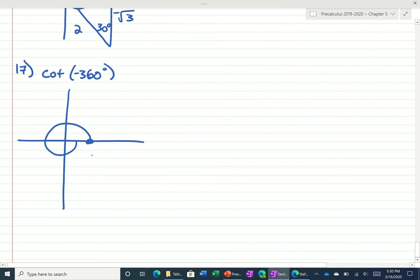The cotangent of negative 360 would be right here. That's a quadrantal angle. The coordinates are 1 comma 0. So if you remember, the tangent of negative 360 would be y over x. So the cotangent of negative 360 is x over y. 1 over 0 is undefined.